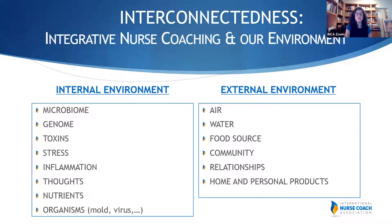When we discuss the internal and external environment, we look at the microbiome, genomics, toxins within, stress, inflammation, thoughts, nutrients, and organisms as part of our internal environment. Externally, we look at air, water, food sources, communities, relationships, home, and personal care products. We discussed in module one that the majority of chemicals come from our foods — whether antibiotics in animal products, or pesticides, fertilizers, and chemical preservatives in our food chain — and thinking about this is a big part of the nutrition coaching aspect.